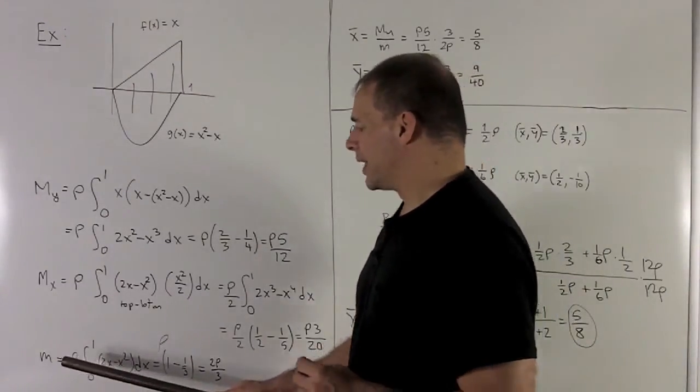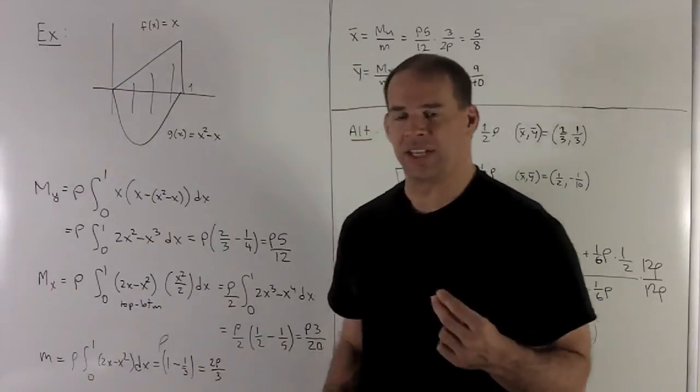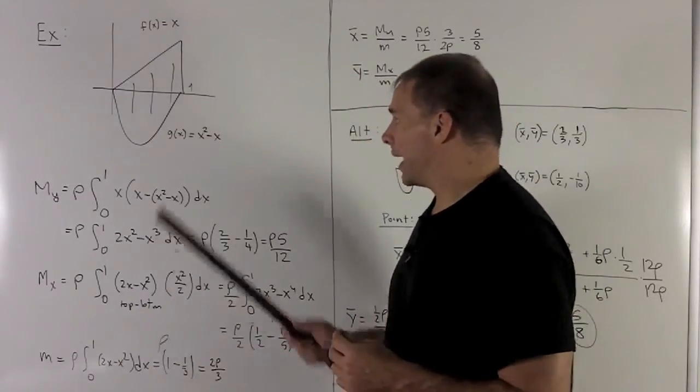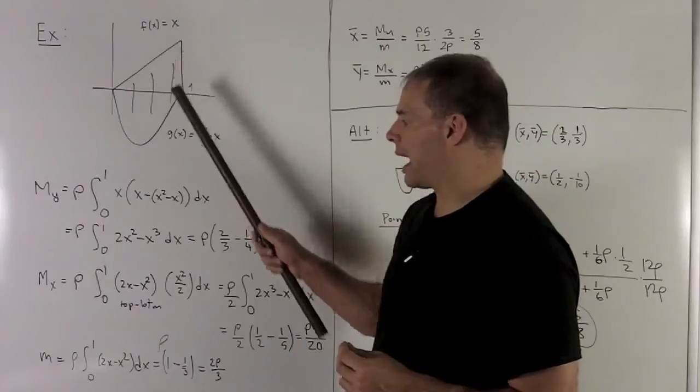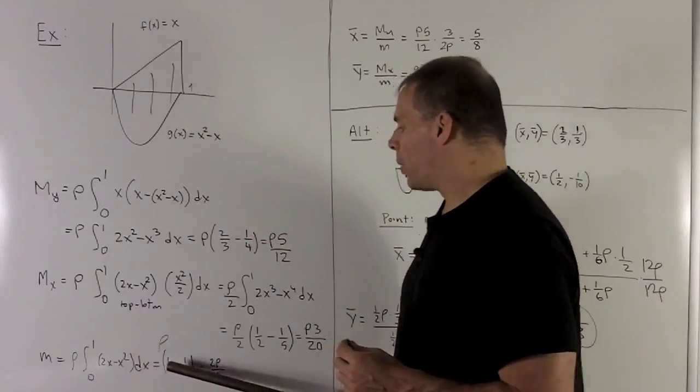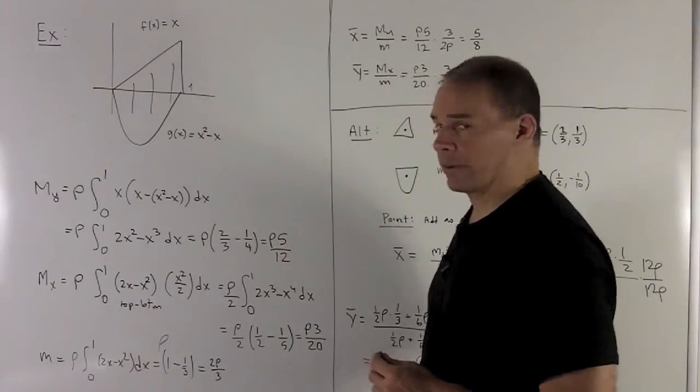For the total mass, that's just going to be given by the density times the area. So the area we just get by integral top minus bottom. And so I wind up there with a 2 rho over 3.